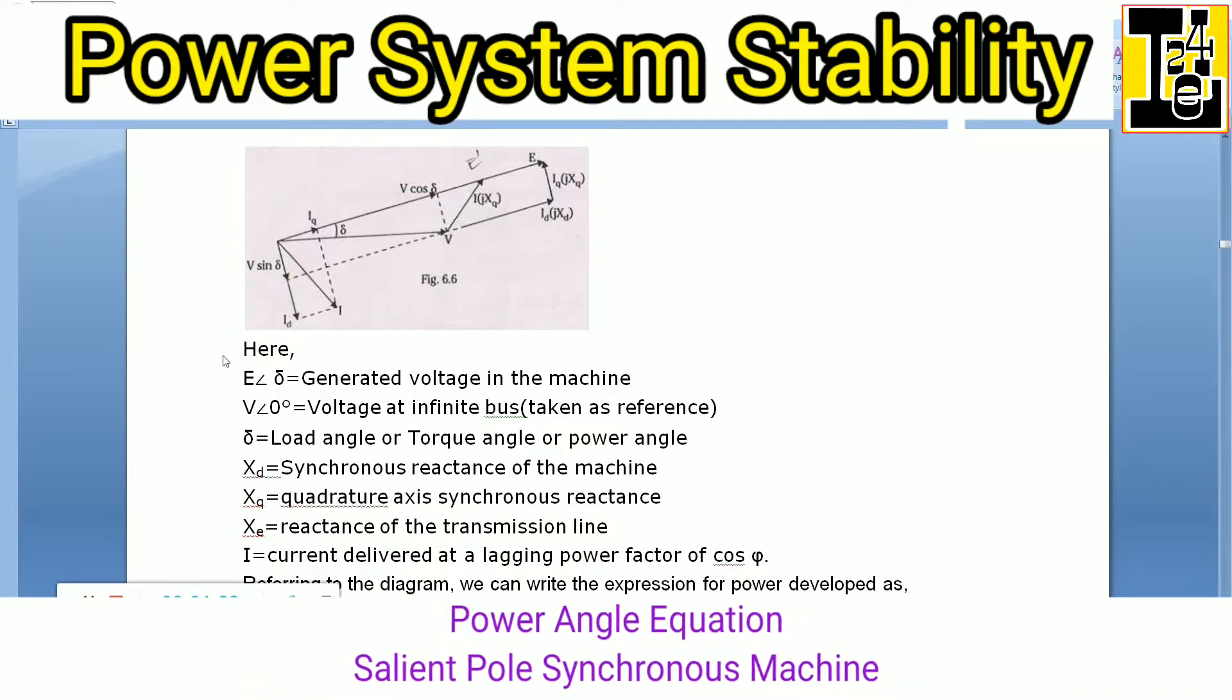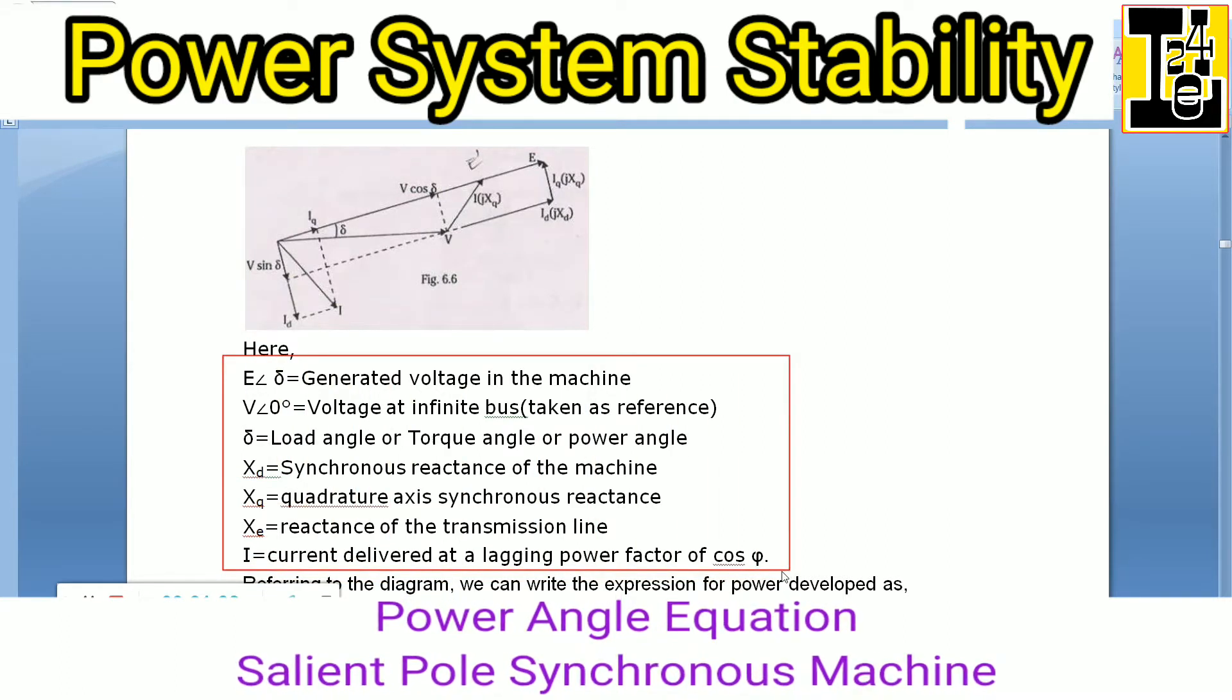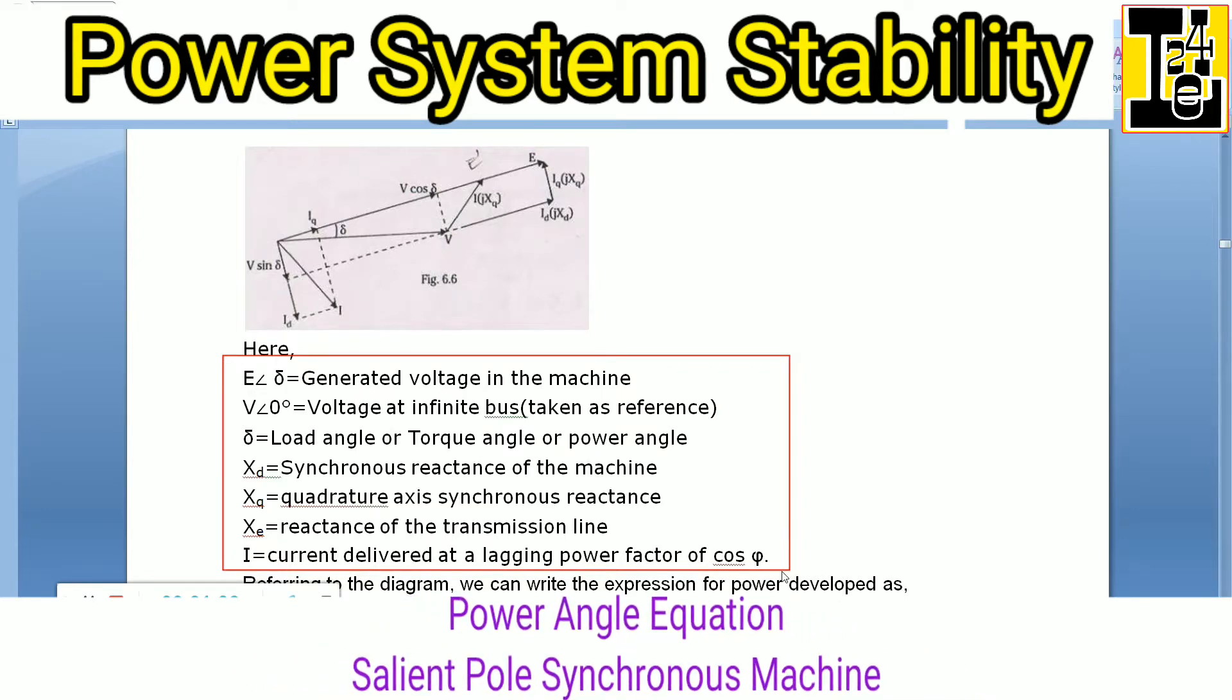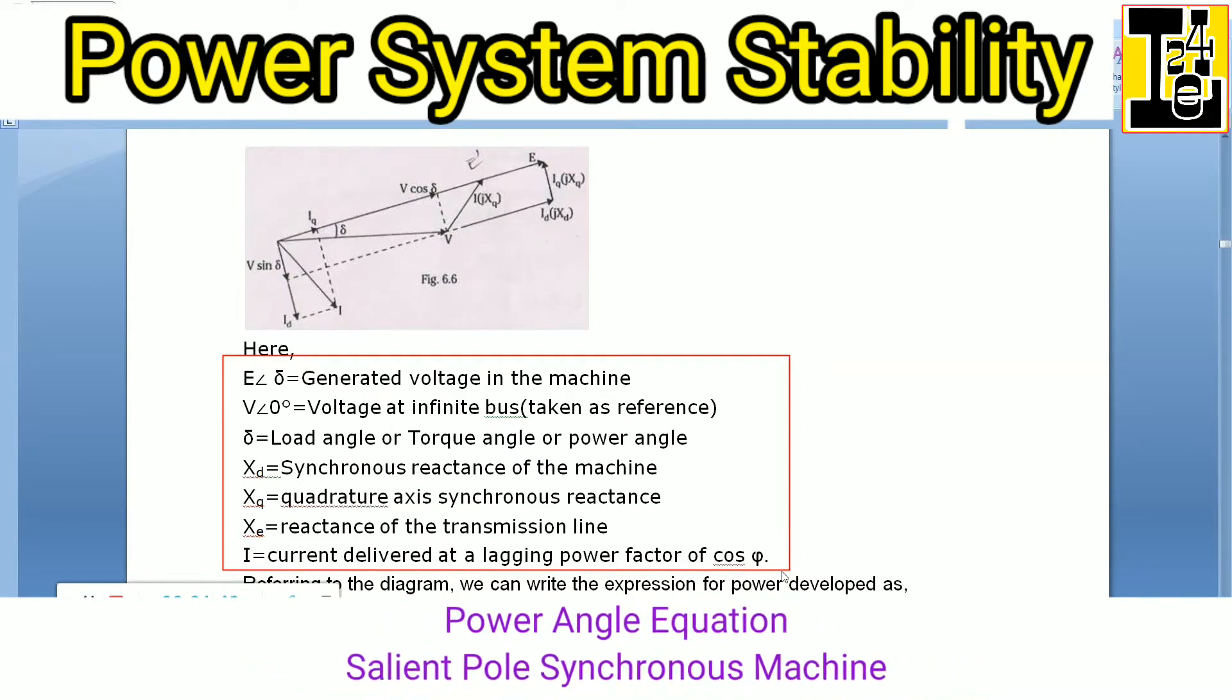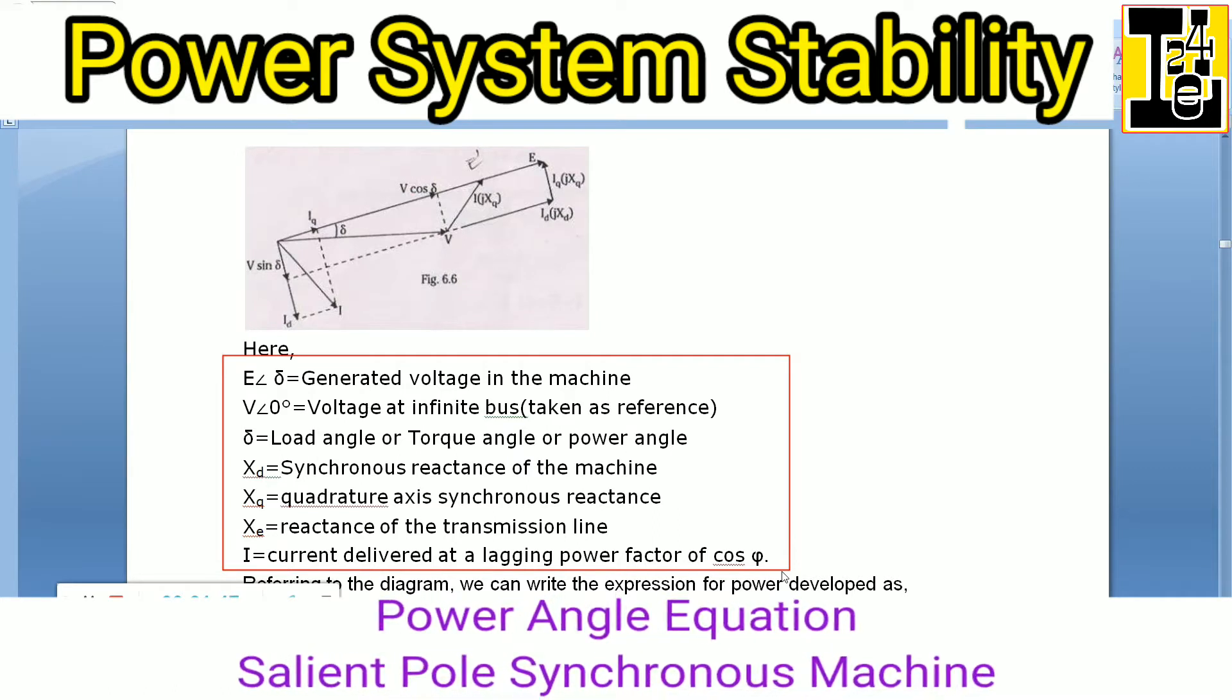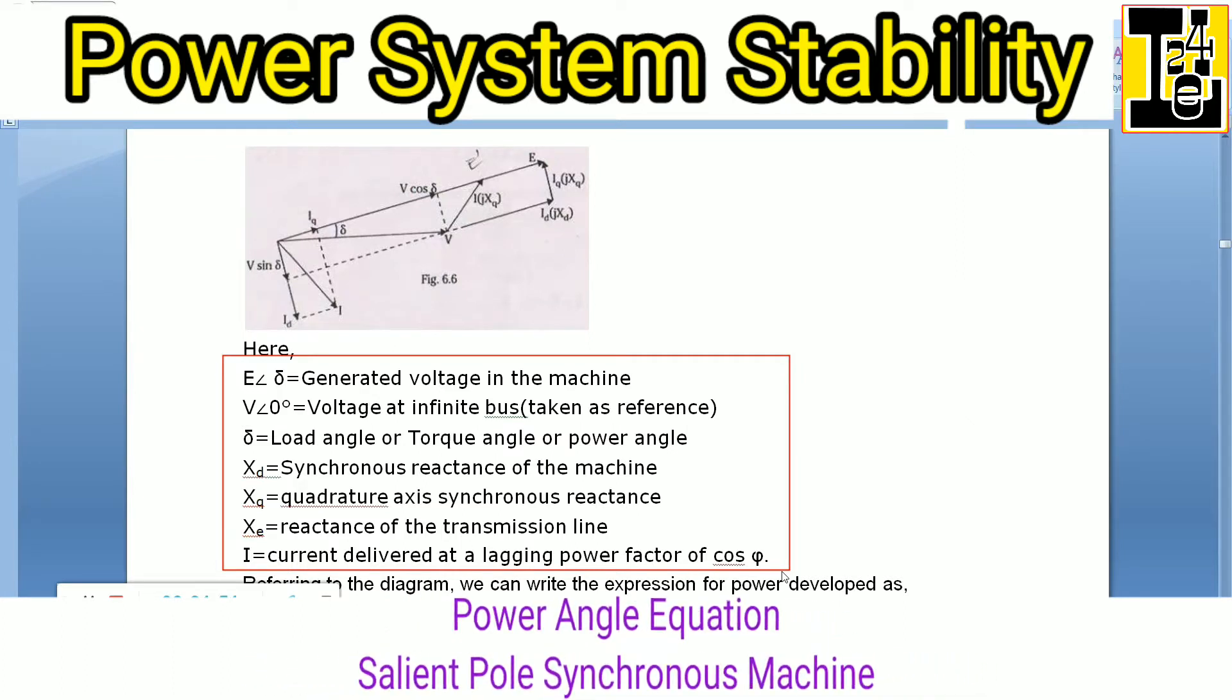Some assumptions: E at angle δ is the generated voltage in the machine. V at angle 0° is the voltage at the infinite bus bar, which is taken as reference. δ is the load angle or torque angle or power angle.